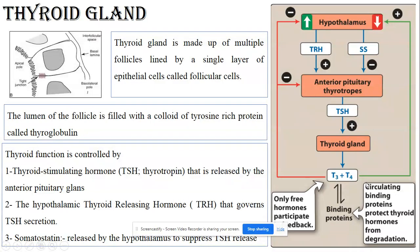The function of the thyroid gland is controlled by the hypothalamus and by the anterior part of the pituitary gland. The hypothalamus produces thyroid releasing hormone, TRH, which travels through the hypophysial portal system and stimulates the anterior pituitary to release TSH — thyroid stimulating hormone. This thyroid stimulating hormone is released in response to TRH.